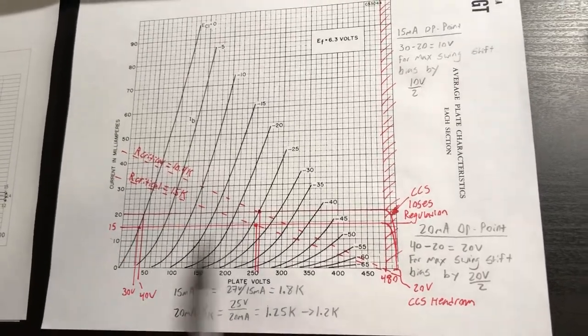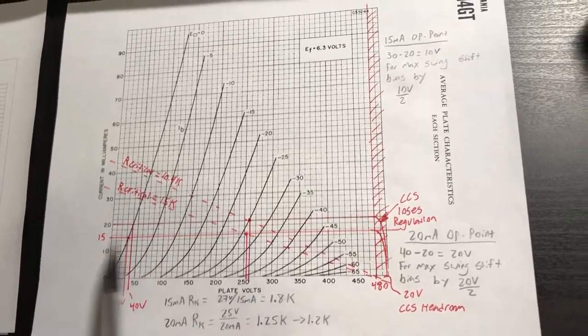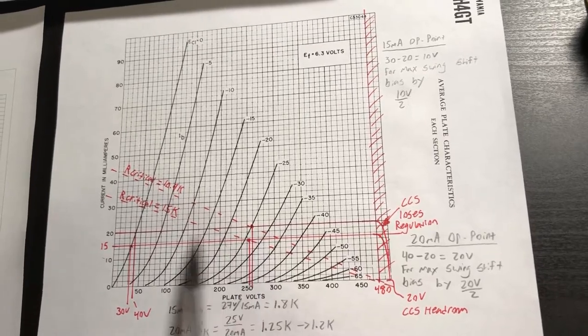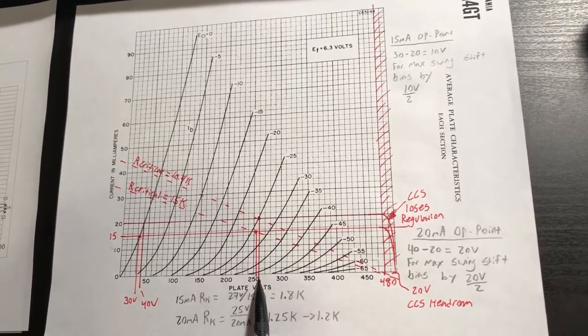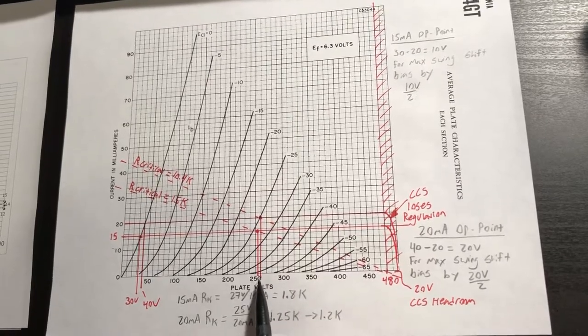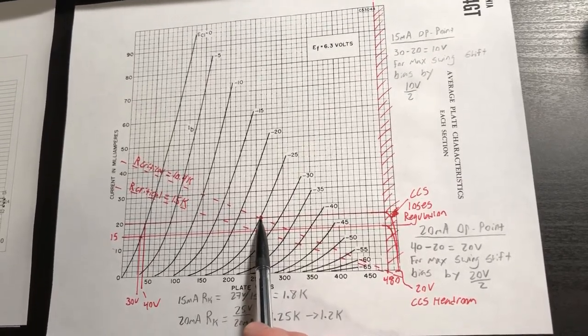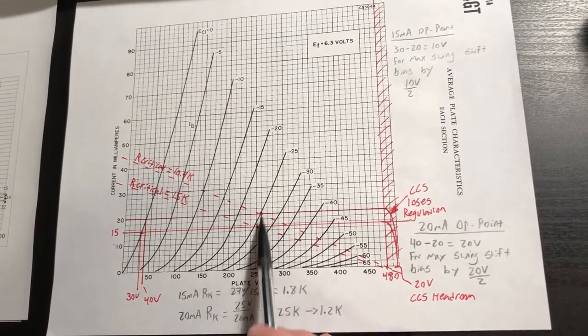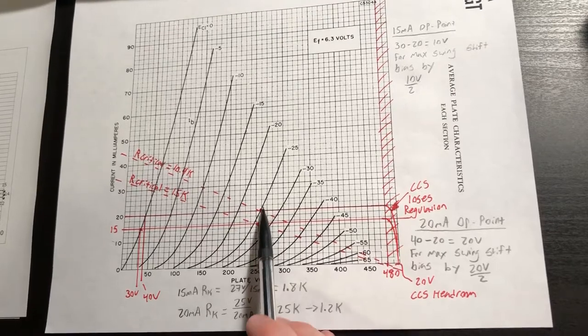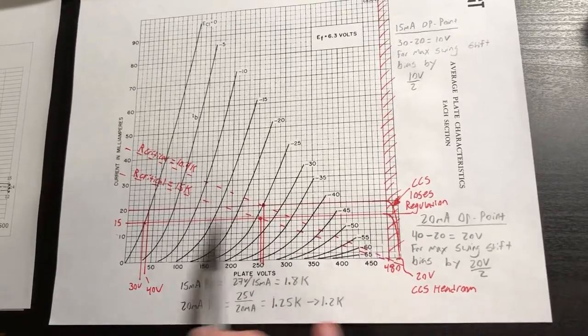And then as you probably guess here at our 20 milliamp operating point, it's basically shifted by another 5 volts. So it'd be 260 volts in order to center bias our 20 milliamp operating point. So that's what I've identified at least as our two starting places to try to maximize the signal swing.